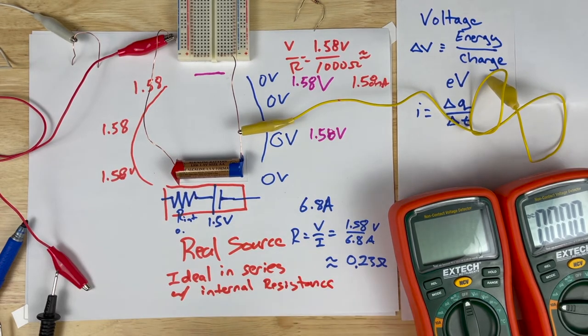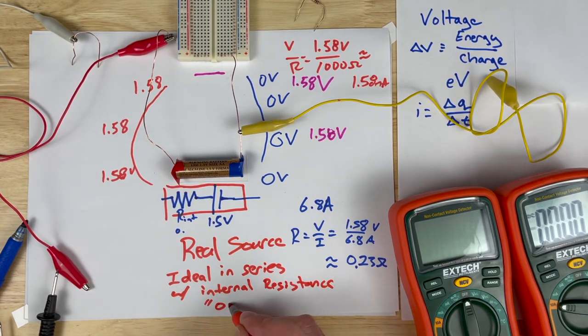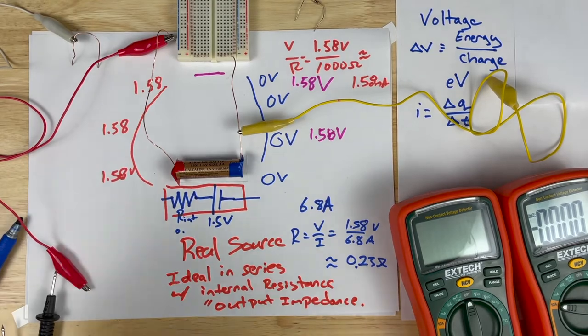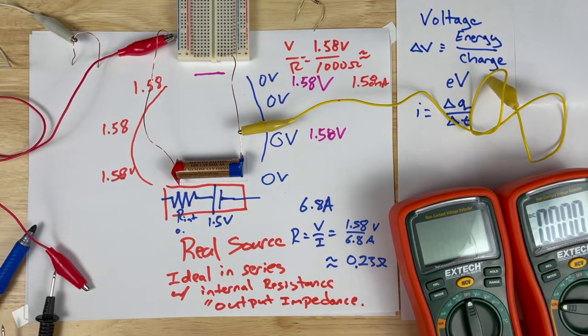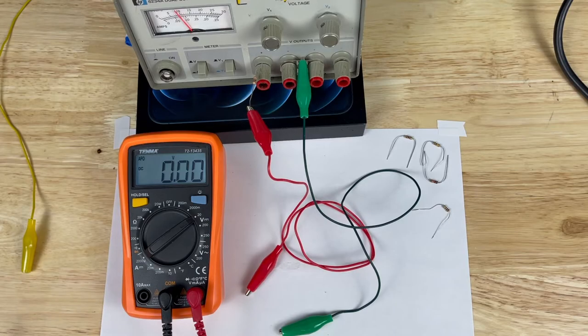This allows us to build a model of a real voltage source as an ideal voltage source with some internal resistance. Importantly, in our model, we cannot access this internal resistance — we can never put probes between the ideal voltage source, only access the terminals outside of this box. In this case, we had about 0.23 ohms. Some of that resistance was due to the multimeter, but even with a superconducting multimeter, a real voltage source can only draw so much current. A real voltage source is an ideal source in series with an internal resistance, and we call that internal resistance the output impedance.